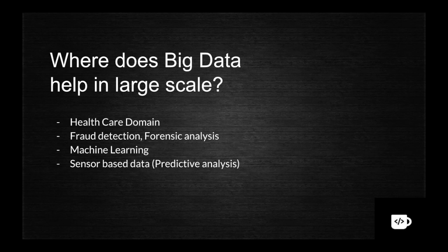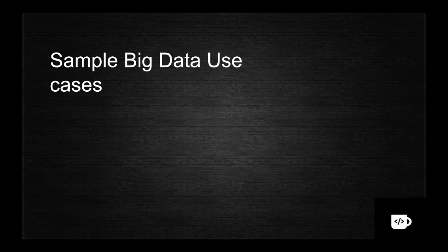Big data is also used in sensor-based data for predictive analysis. For example, Amazon Go is a store where you walk in, it automatically takes your profile, and when you pick up a product it automatically adds it to your basket — all done by means of sensors. That is where people see big data as the next big thing.